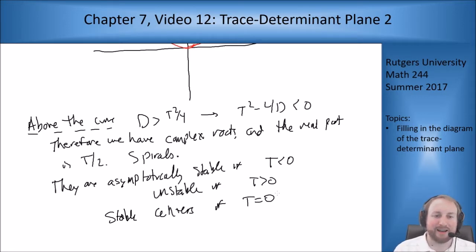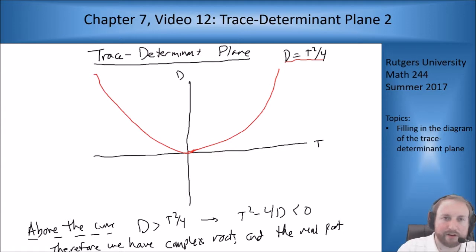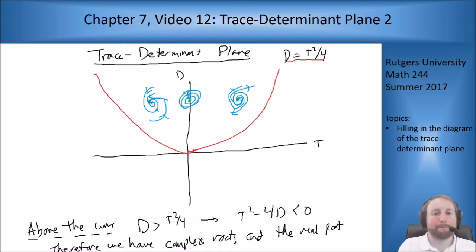So from above the curve, I get complex roots, which means I get spirals. They're asymptotically stable for t less than 0, they're unstable for t bigger than 0 and they are stable centers for t equals 0. So let's go ahead and add those to our picture. So above the curve, I'm going to draw equilibrium points for what we're looking at. If t is negative, I'm going to get asymptotically stable spirals, so spirals going in. If I am bigger than 0, t is bigger than 0, I'm going to get spirals going out. So these are unstable, and at the center here I'm going to get centers. So I just get ellipses here.